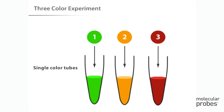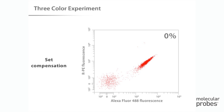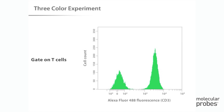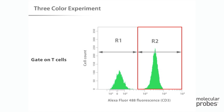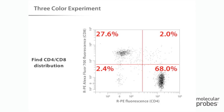Single-color tubes of the blood cell sample will also be prepared. Using forward and side scatter, we will gate on lymphocytes. Using data from the three single-color tubes, we will set compensation. We will locate the T cells using a histogram of CD3 staining and set a gate. Finally, we will use a CD4 versus CD8 dot plot to determine what percentage of the T cell population has the CD4 antigen and what percentage has the CD8 antigen.